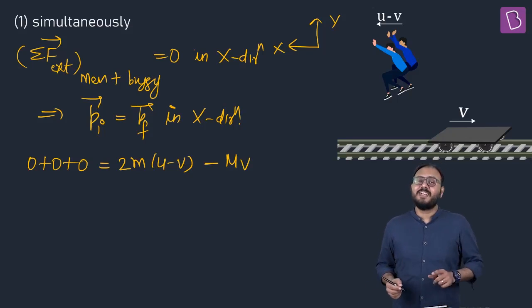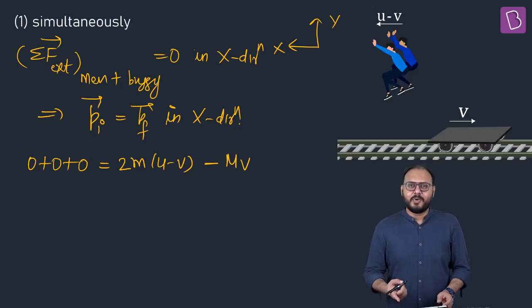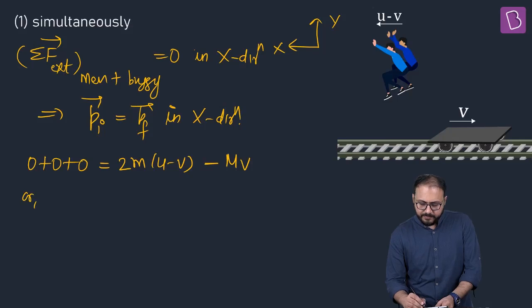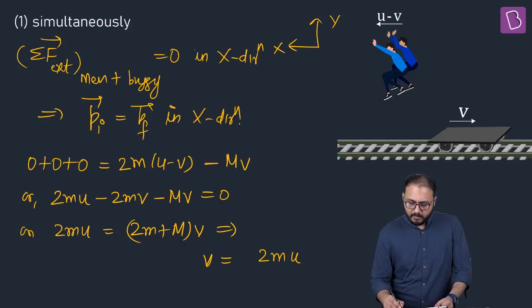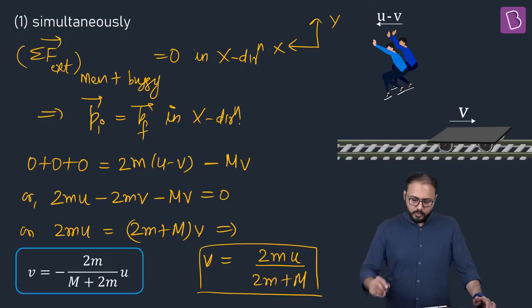You need to find v. Now check, in the previous case it was u plus v, it will be u minus v because this is like a recoil, bullet fired.